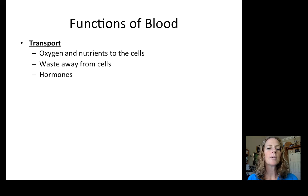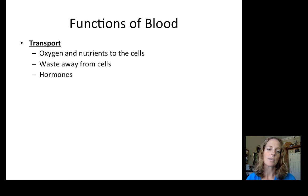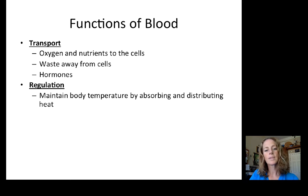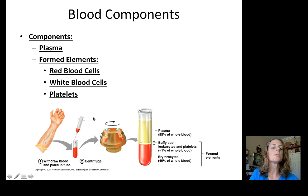The function of blood is transport: it transports oxygen and nutrients to our cells for cellular metabolism, and removes metabolic waste — namely carbon dioxide — from the cells. Blood also transports hormones affecting whole-body homeostasis. It functions in regulation by maintaining body temperature, and in protection by preventing infection and blood loss.